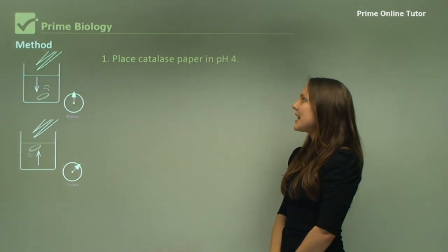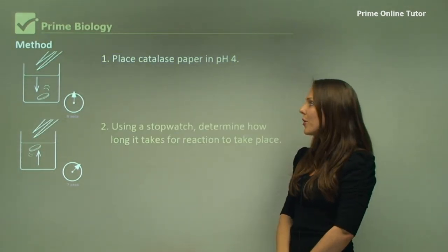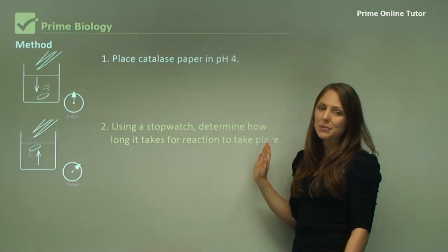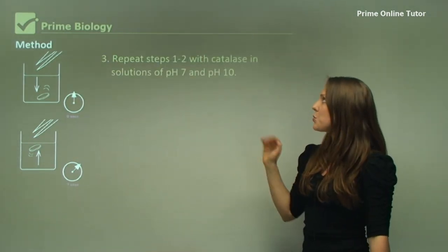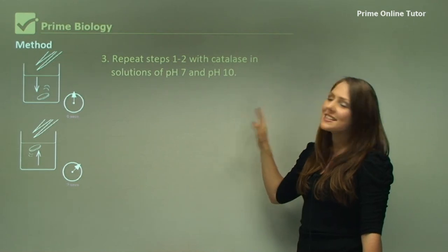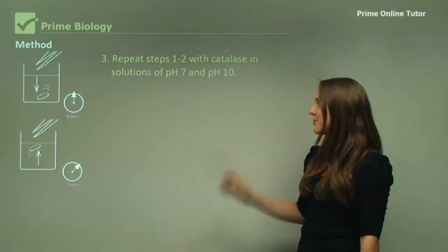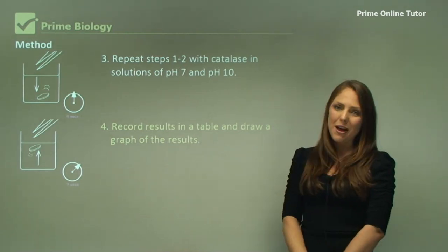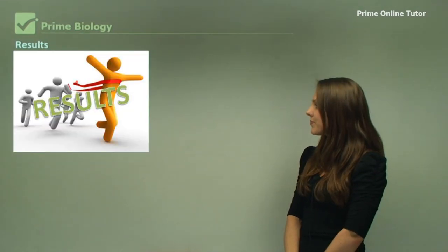You place the catalase paper in pH 4. Using a stopwatch, determine how long it takes for the reaction to take place. Repeat steps 1 to 2 with catalase in solutions of pH 7 and 10. You record all results in a table and draw a graph of the results.